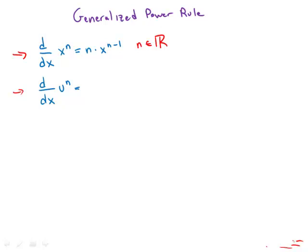And so now what we have is the x to the n is the outside function. So the power part is the outside function. So it will be the derivative of that outside function, n times u to the n minus 1, times the derivative of the inside function, u prime.